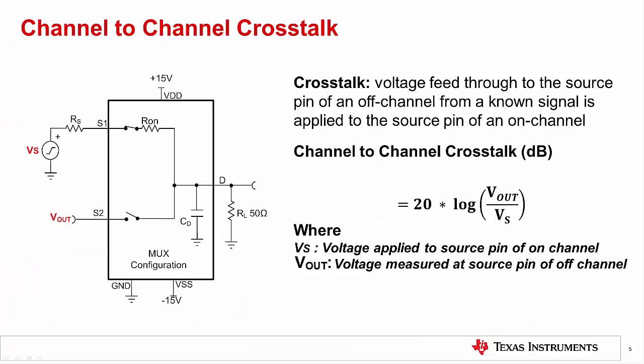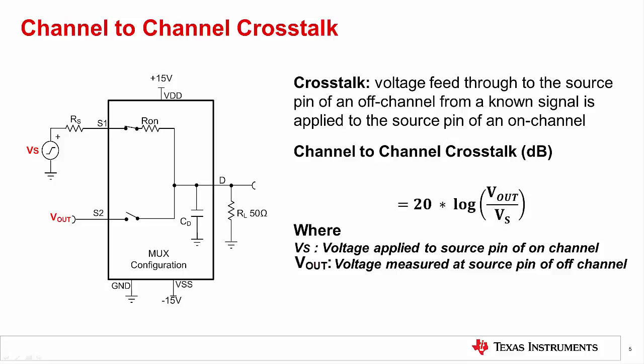The next parameter we will discuss is channel-to-channel crosstalk of the multiplexer. Channel-to-channel crosstalk is defined as the voltage that appears on the source pin of an off channel when a known signal is applied to the source pin of an on channel. It is measured in dB and given by 20 times the log of the ratio of the crosstalk signal Vout and the source signal applied to the on channel Vs. Crosstalk is a frequency-dependent phenomenon that occurs mainly due to the off-state parasitic capacitances of the multiplexer, and can also be introduced by poor layout techniques.